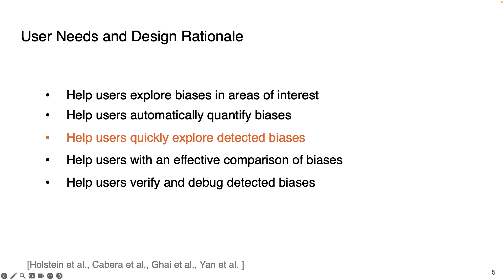Previous studies also show that machine learning developers, practitioners, and data scientists struggle to find biases within limited time and resources. Hence, quick and intuitive exploration of biases is necessary. Previous work also shows that users should be able to effectively compare between biases so that they can understand the severity and rank the biases based on the severity. And finally, previous studies have shown the necessity of understanding, debugging, and validating detected biases. As shown by a recent study, an effective way to understand the source of a bias is to investigate the training data.